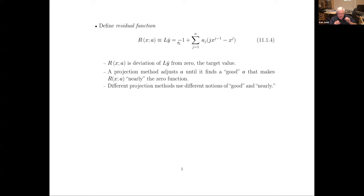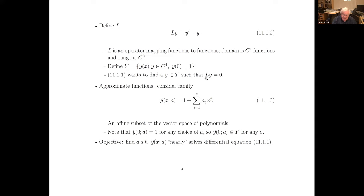Why do I call that the residual function? Because we want to find a y such that L maps y to zero. So any deviation from zero tells you that y does not satisfy the equation L y equals zero. L of y-hat is also going to be a function which is a deviation of L y-hat from the target of the zero function. When I say L y equals zero, I mean zero as in the zero function — a function that's zero at every point x. It is a function, not a scalar, and it's the zero function. What we're trying to do is find a coefficient set a such that the residual for that given a is nearly the zero function.